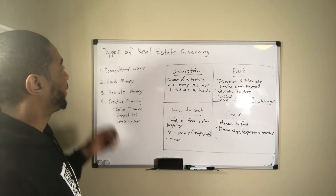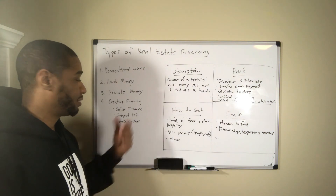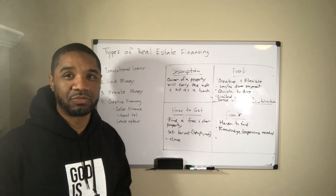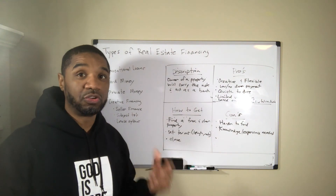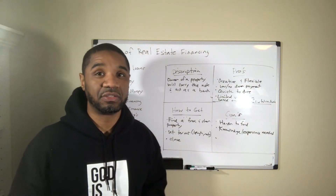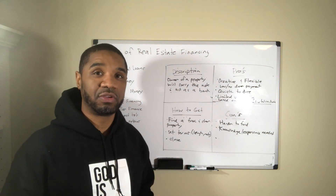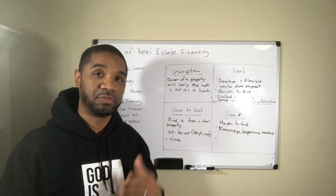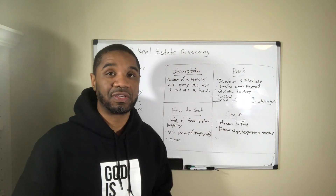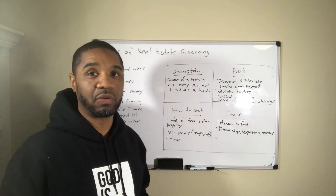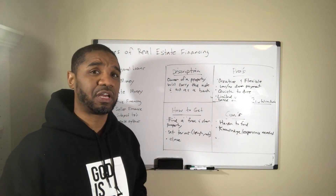So there you have it — those are the four major types of financing in real estate: conventional loans, hard money, private money, and creative financing. I didn't really go into subject-to and lease options on this video, but there are friends who explain those better than I can. As you get into the creative financing world you can do really well. Every investor has to get into this over time because as more deals come your way you want to have more deals than you have money — that's when you can go find private lenders and be creative.